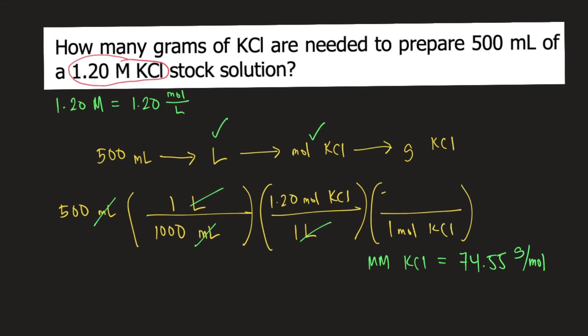And on top, you put 74.55 grams. So moles of KCl will cancel, and our final unit is grams of KCl.